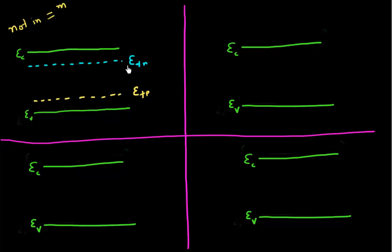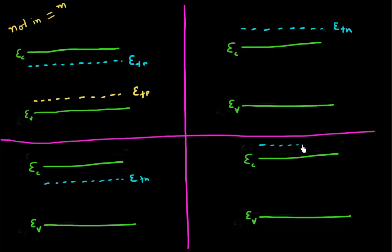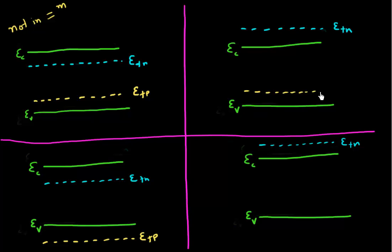The quasi-Fermi level for electrons could be below the conduction band, as shown here, or it could be above the conduction band, as shown here. Similarly, the quasi-Fermi level for holes could be above the valence band or below the valence band.